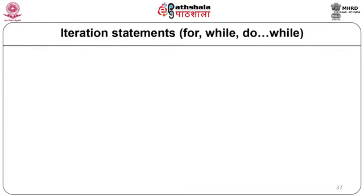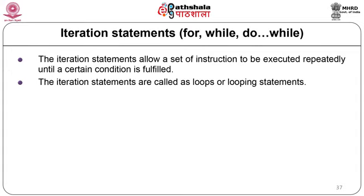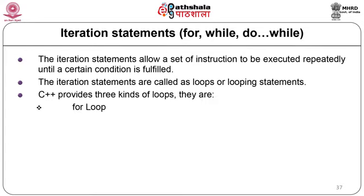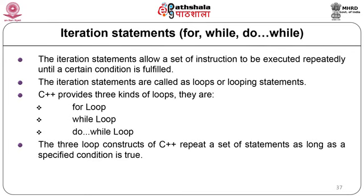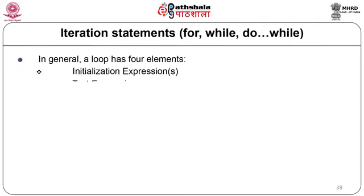Iteration statements allow a set of instructions to be executed repeatedly until a condition is fulfilled; they are called loops or looping statements. C++ provides three kinds: for loop, while loop, and do-while loop. In general, a loop has four elements: initialization expression, test expression, update expression, and the body of the loop.